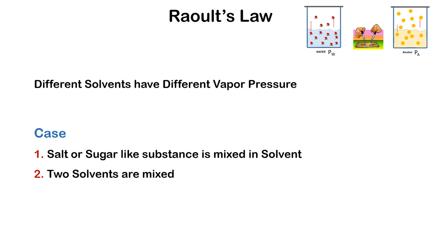We have now established that different solvents have different vapor pressures. We will look at two cases now: one where a solid solute like salt or sugar is mixed in a solvent, and second where two solvents are mixed together.